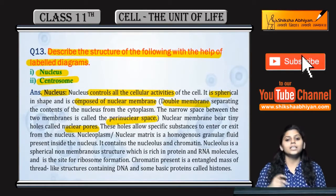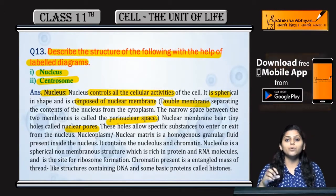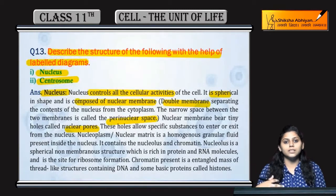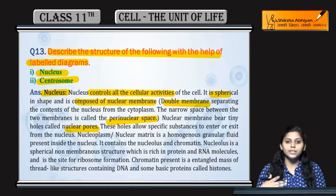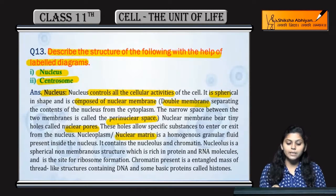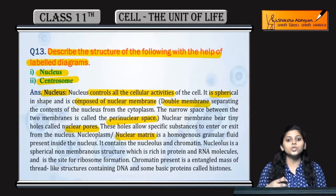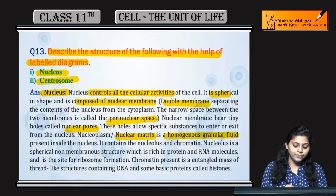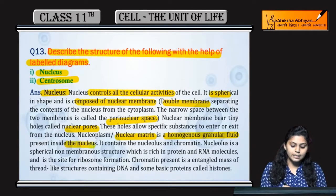Inner aur outer membrane ke beech mein jo space present hai, that is perinuclear space. Jo nuclear pores banti hain, fuse karke, yeh allow karte hain kuch selective substances ko to enter or exit the nucleus. Nuclear matrix or nucleoplasm present hota hai, that is a homogeneous granular fluid inside the nucleus.